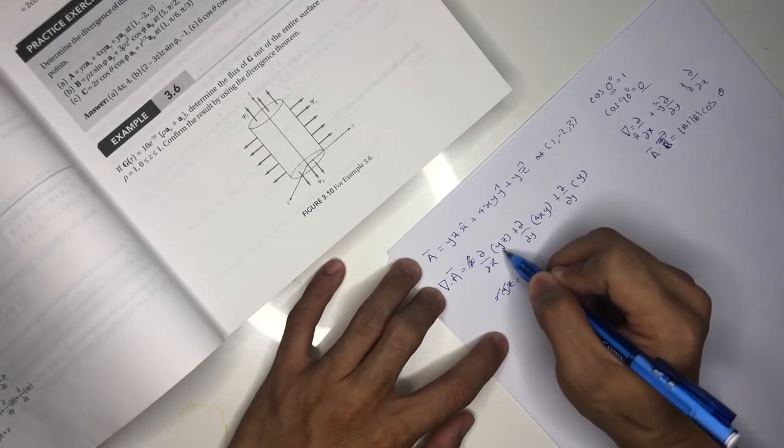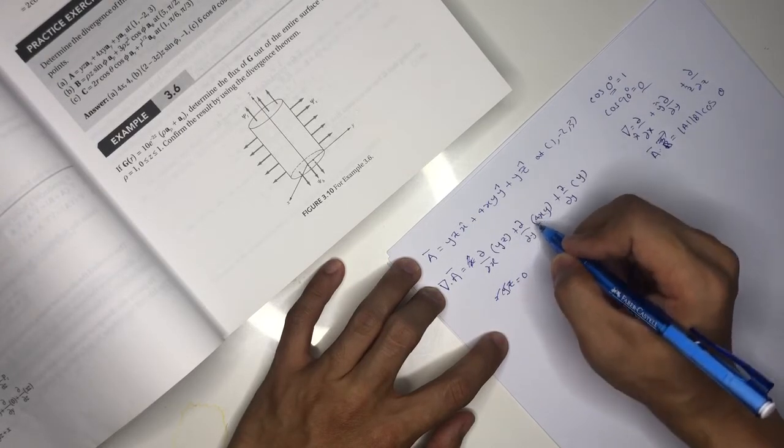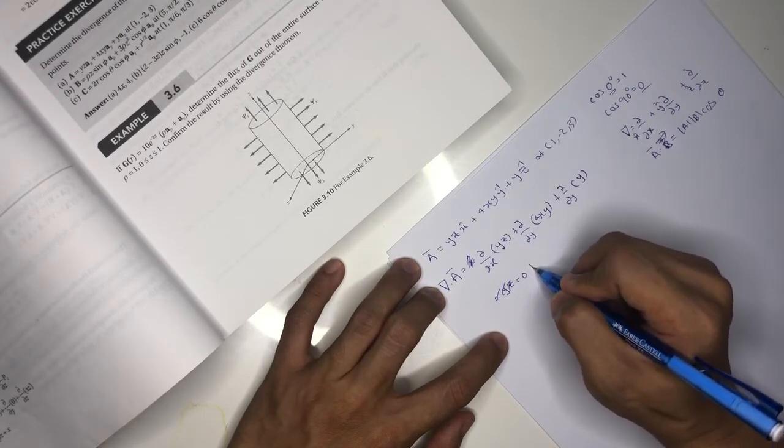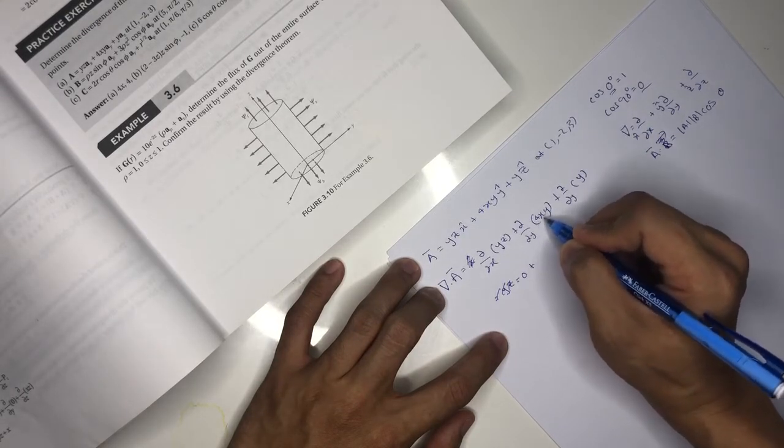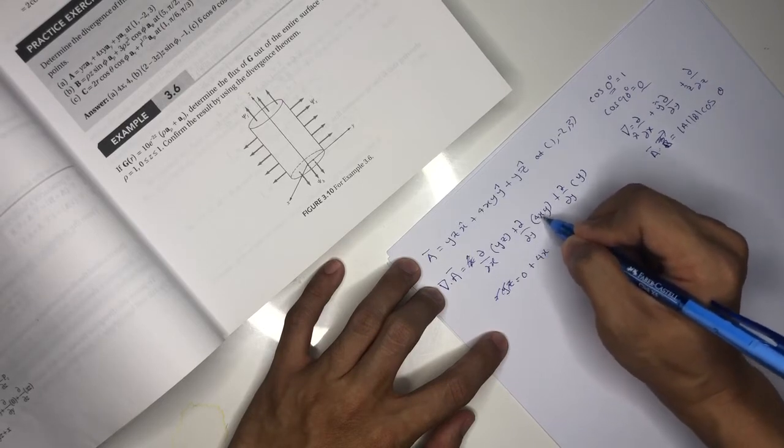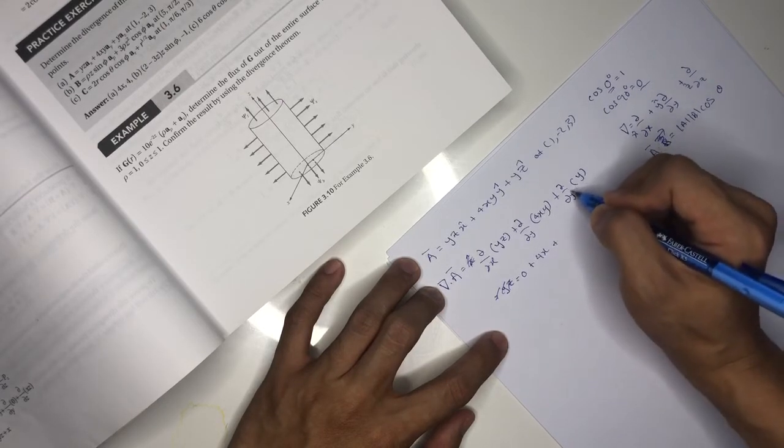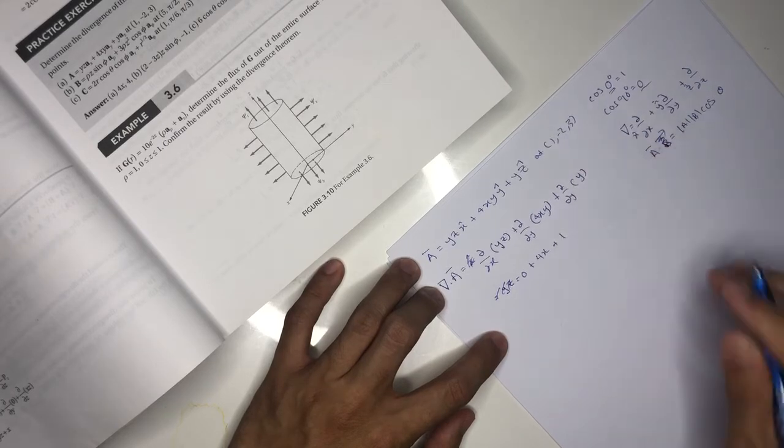You don't have x here anymore in the third term, so it's like a constant. For the y component, there is still y, so when you differentiate 4xy with respect to y, you get 4x. When you differentiate y, you're left with 1, giving us 4x.